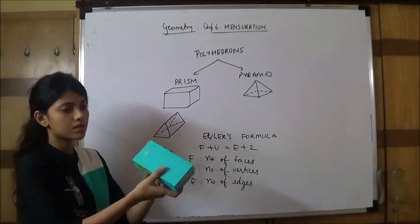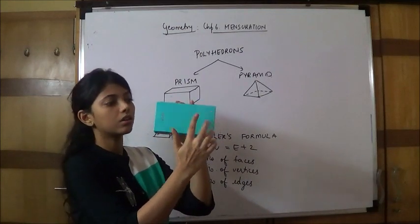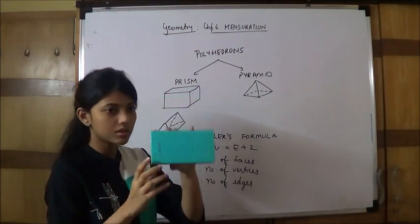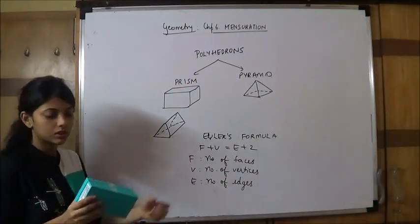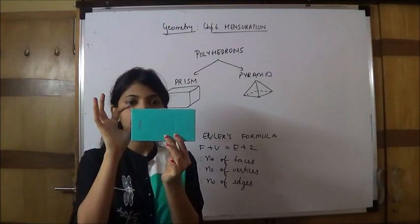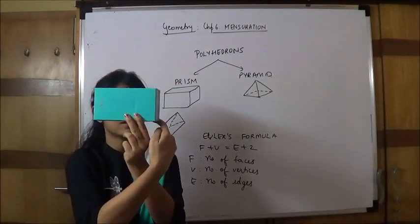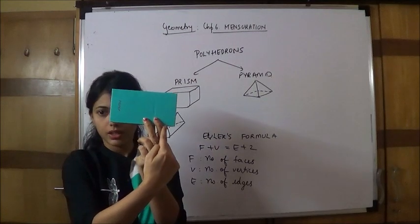Faces means the plane surface area: 1, 2, 3, 4, 5, and 6. These are number of faces. What is vertices? The corner points, vertexes: 1, 2, 3, 4, 5, 6, 7, and 8. These are called vertices.